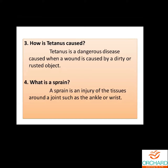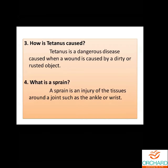One more time: how is tetanus caused? Tetanus is a dangerous disease caused when a wound is caused by a dirty or rusted object. What is a sprain? A sprain is an injury of the tissues around a joint such as the ankle or wrist.